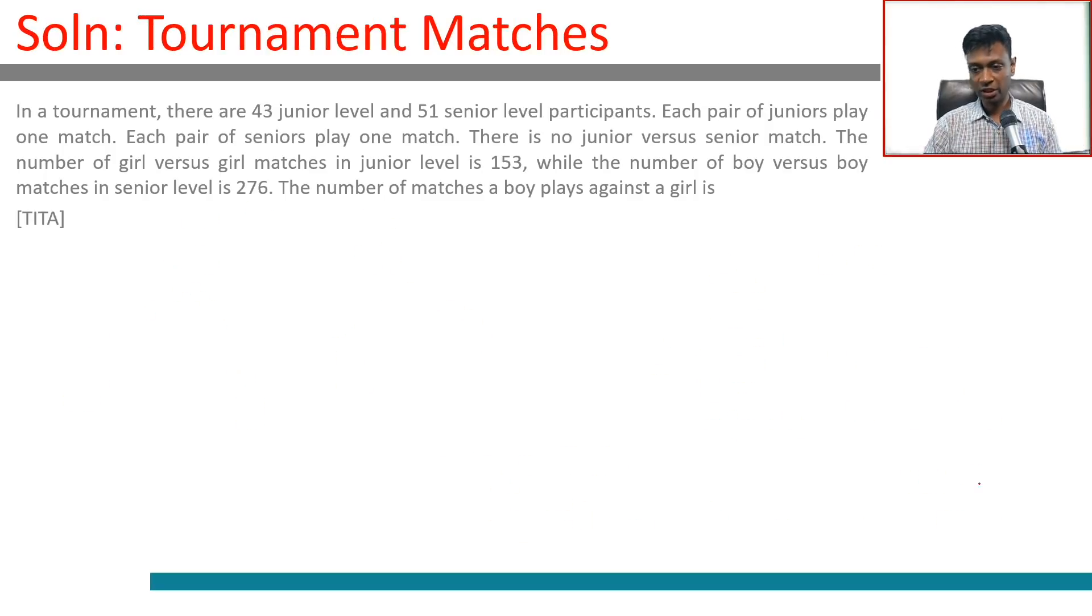I'm going to write this down. m into m minus 1 is 552. 552 is 276 into 2, which is 138 into 4, which is 69 into 8, which is 23 into 24. We've hit paydirt.